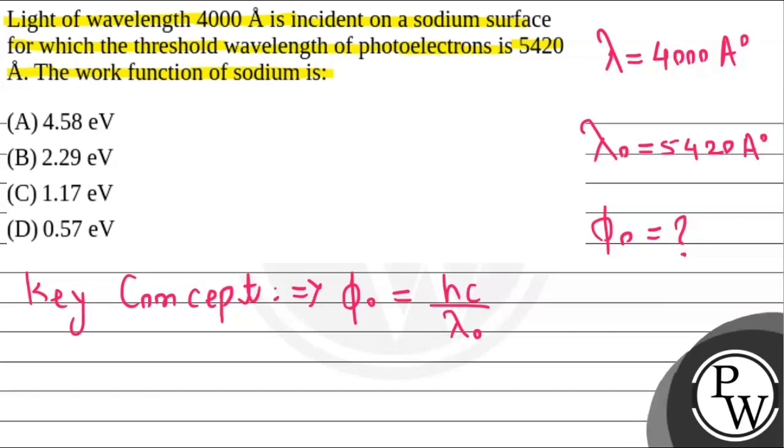So we need to substitute the values here. We need to find work function. So phi naught equals, the Planck constant h value we know is 6.62 into 10 to the power minus 34 joule second.